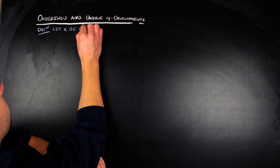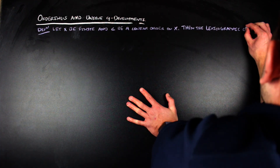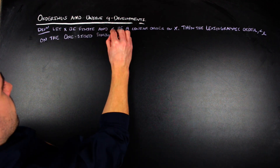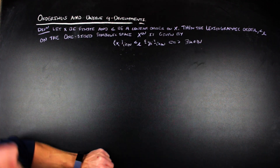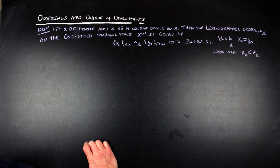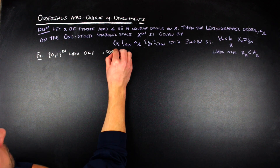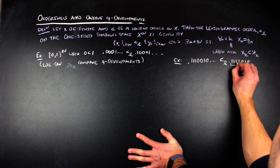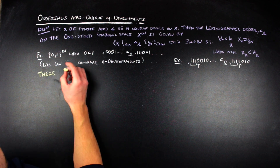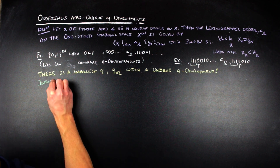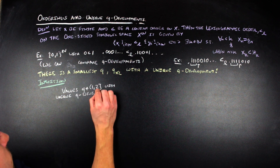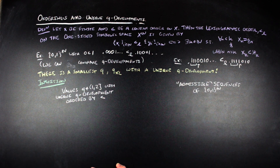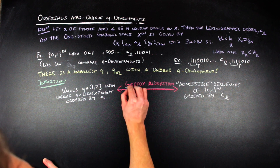The lexicographical ordering works just like a dictionary does. We say 0 is a smaller symbol than 1, so one sequence is less than another under lexicographical ordering if, in the first place they disagree, the lesser sequence has a 0 and the greater sequence has a 1. In particular, the greedy algorithm is an order-preserving bijection between the set of numbers that give a single q-development — ordered with the usual less-than — and the set of a particular type of sequences of 0s and 1s called admissible sequences, ordered with the lexicographic ordering.